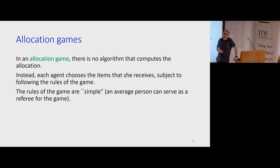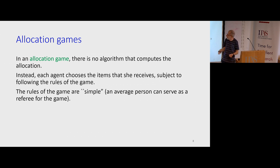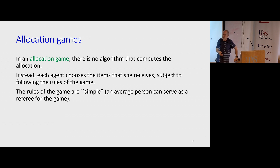The distinction between an allocation algorithm and an allocation game: formally it's not so easy to make, because any allocation algorithm is a game in the sense that you can supply whatever valuation function you have. For a game, the rules are simple — it's obvious to you how and why you got the particular allocation. For an allocation algorithm, it might do mysterious computations that make it difficult to figure out whether you got the right allocation. A game is more transparent to the players. We'll see an example — the point is that the rules of the game are simple, it's kind of obvious what's going on.